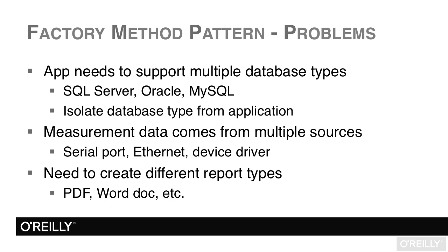In measurement, data can come from a lot of different sources — it might be a serial port, an Ethernet source, a device driver, perhaps Modbus or OPC. Measurement apps often have different data sources that combine: you may have pressure sensors in one place and temperature sensors in another, all coming in on different buses and different ports. But again, we don't want the data to be tangled up with the actual source type, and we don't want the code dealing with the source type spread throughout the application.